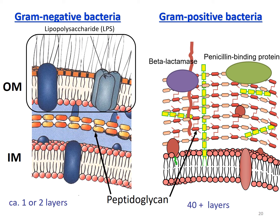Although gram-positive bacteria have a very thick layer of peptidoglycan, it is exposed to antibiotics, making them generally more susceptible. However, gram-positive bacteria are not totally without defense — they produce enzymes like beta-lactamase that can hydrolyze beta-lactam antibiotics, and binding proteins such as penicillin-binding protein that can deactivate the antibiotics. Overall, antibiotic resistance is a great issue in medical science, and understanding the structure of sugars is essential for progress in antibiotic development.